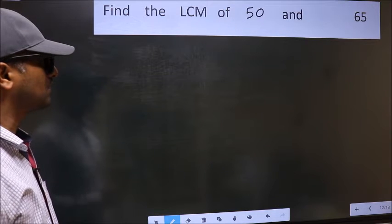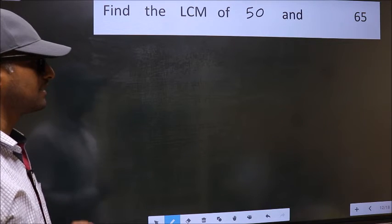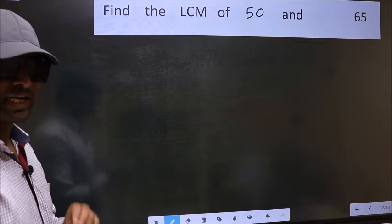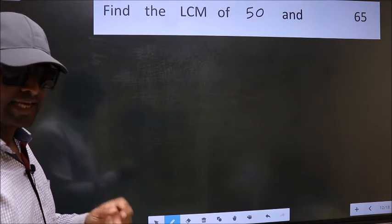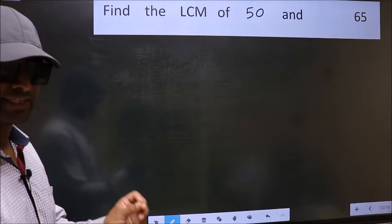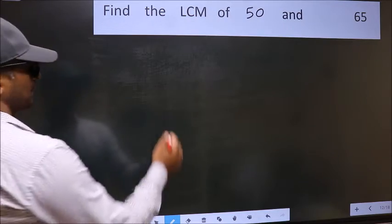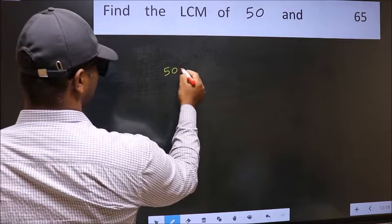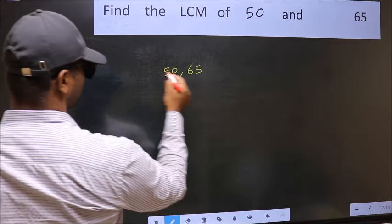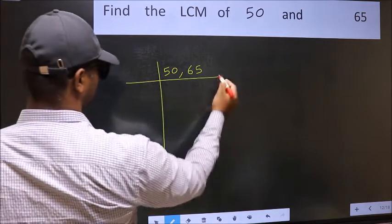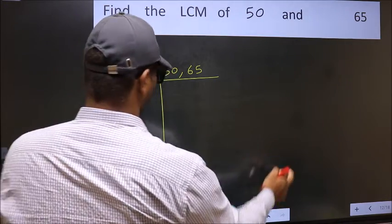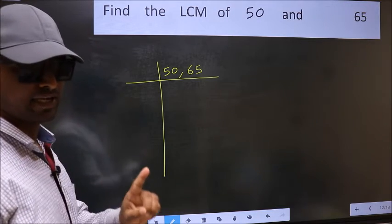Find the LCM of 50 and 65. To find the LCM, we should frame it in this way: write 50 and 65. This is your step 1.